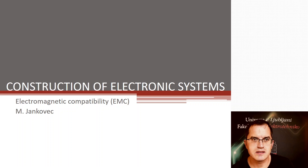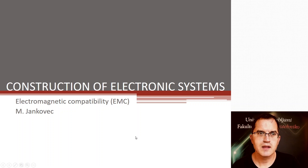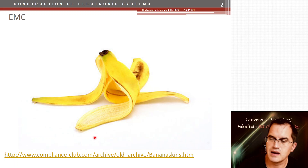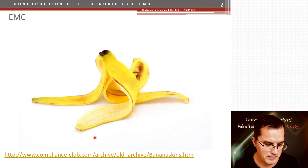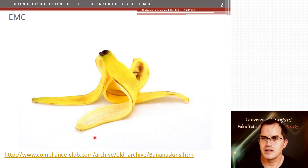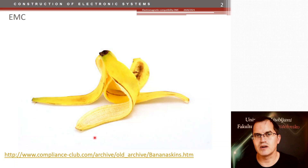During this course we will spend a lot of time on different features of electromagnetic compatibility. Today we talk about the basics — how EMC started and what are the main things to consider. There is a website called 'Banana Skins' that gathers different events worldwide regarding EMC problems. Having an EMC problem as a producer of electronic devices is like stepping on a banana skin — you can fall very hard.